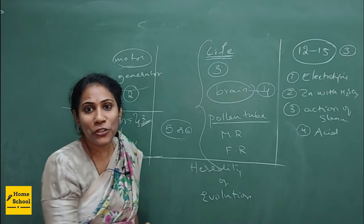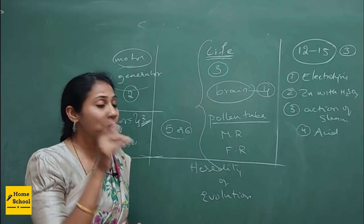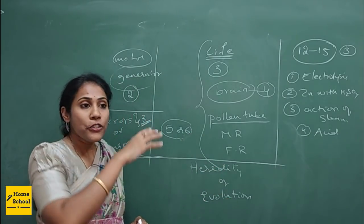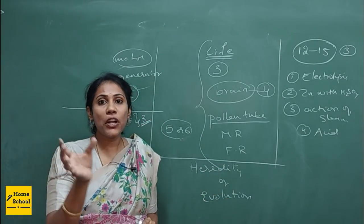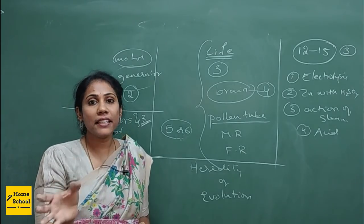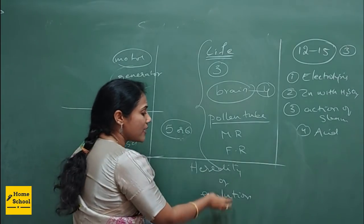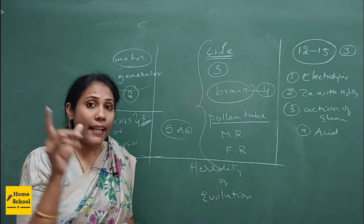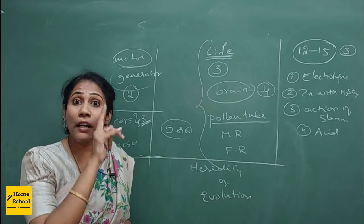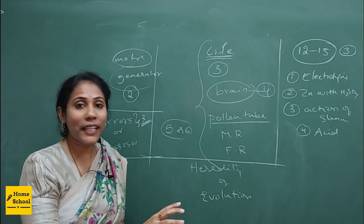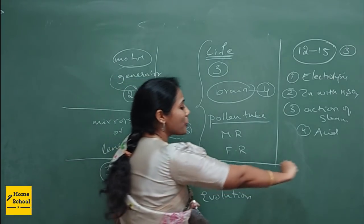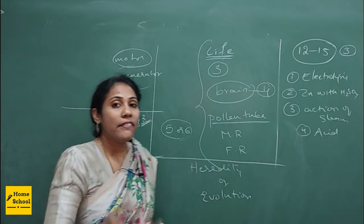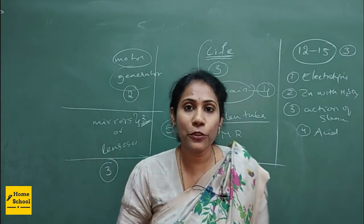You can leave evolution if you're strong in heredity, or you can leave heredity if you're confident about evolution. Just decide based on your confidence and capacity which is easier for you — whether heredity or evolution — and become perfect with that concept so you can completely score four marks. You have a choice here.